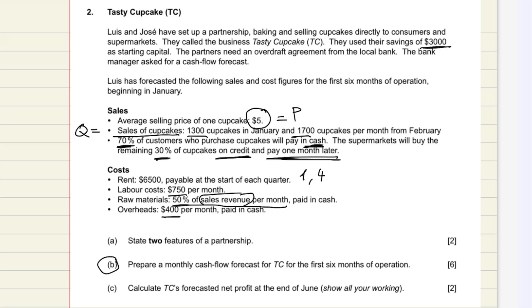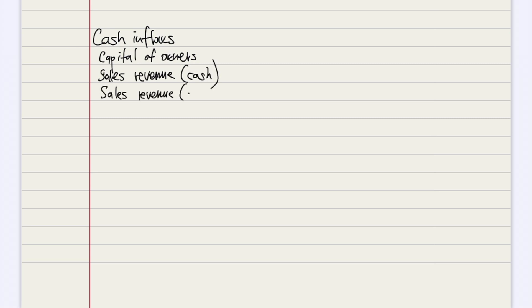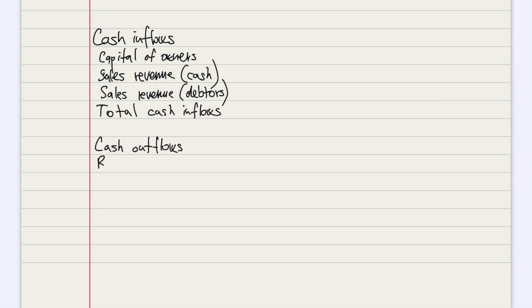Let's have a look at the monthly cash flow forecast and how to write it. First, the most important thing is to write the headings. We start with cash inflows: capital, owners, then sales revenue in cash, sales revenue coming from debtors, and then we always put the total cash inflows.